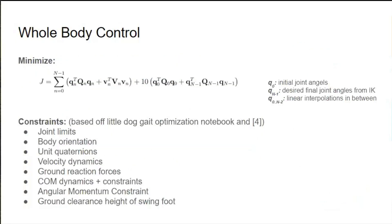The desired joint positions for each footstep configuration are then passed to the whole-body controller, which plans a trajectory for each joint from the start to the end configuration. The cost function puts a high weight of 10 on the initial and end configurations, and a lower weight on the positions in between, which are linear interpolations. The reason we do this is that the problem becomes infeasible when adding the start and end configurations as hard constraints. Our actual constraints consist mostly of the same ones as we saw in class for gait optimization on LittleDog — these include joint limits, velocity dynamics, center of mass dynamics, and more.